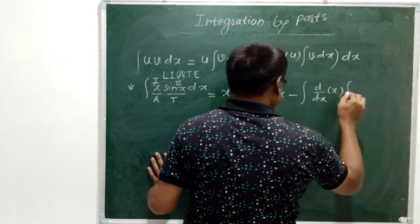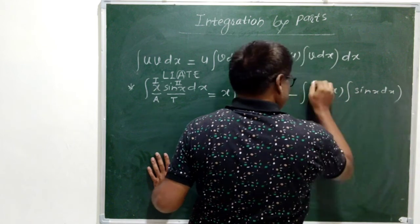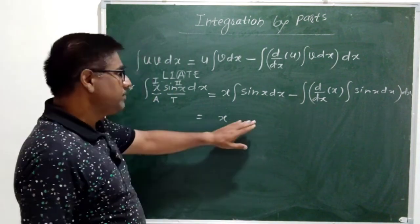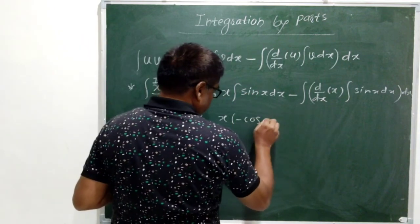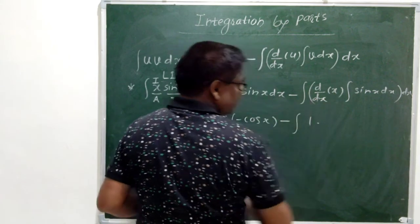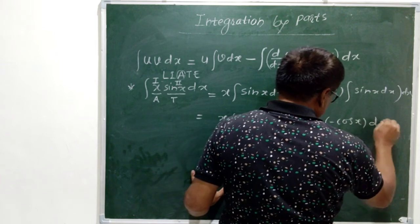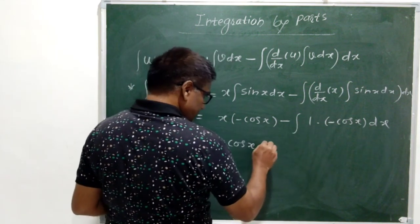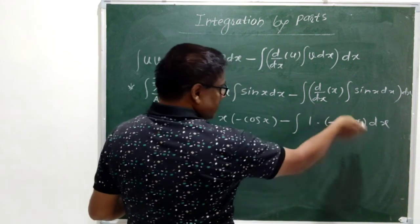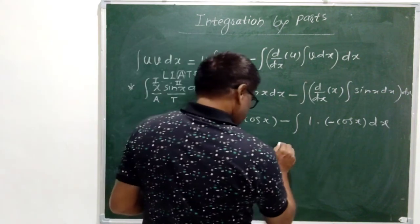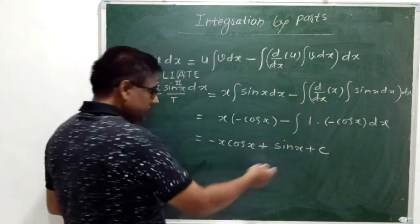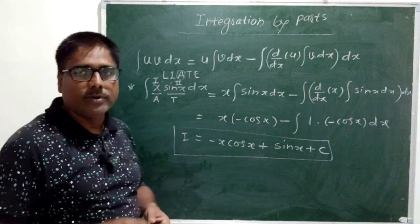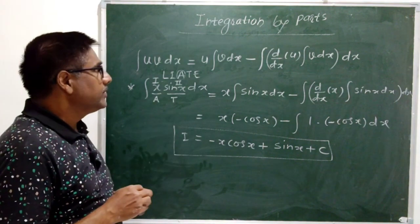Then integral of second, that is sin(x) dx. Now, x into integral of sin(x) is minus cos(x), because the derivative of minus cos(x) is plus sin(x). Minus the derivative of x, which is just 1, times integral of sin(x) which is again minus cos(x). This equals minus x cos(x). This minus and this minus will become plus. The integral of cos(x) is sin(x), because the derivative of sin(x) is cos(x) — integration is the anti-derivative. So the result is minus x cos(x) plus sin(x) plus C, the constant of integration, as this is an indefinite integral. This is the answer for the given problem.